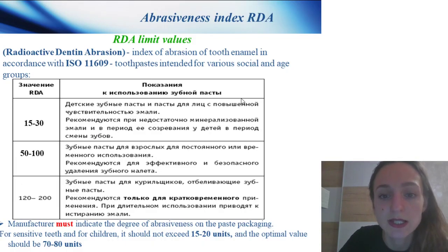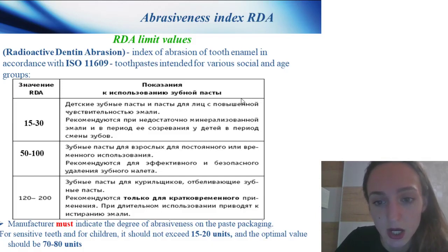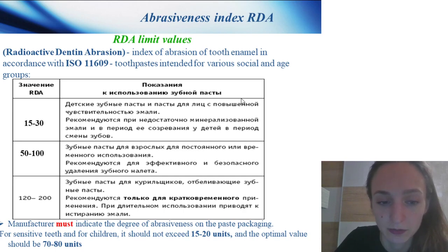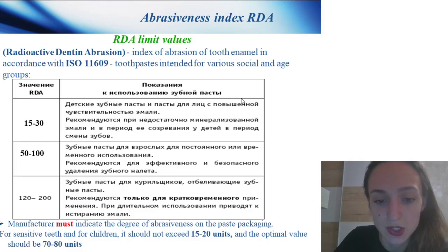Abrasive components of toothpaste: basic — dicalcium phosphate, sodium bicarbonate, table salt, silicon compounds, calcium phosphate compounds, and aluminum compounds; additional — sodium metaphosphate, pyrophosphates, and aluminum silicate. RDA (Radioactive Dentine Abrasion) limit values: this index of abrasion is defined according to ISO. From 15 to 30 RDA is for children's toothpaste and for patients with enamel sensitivity; when the patient has first and second stage of mineralization phenomena.